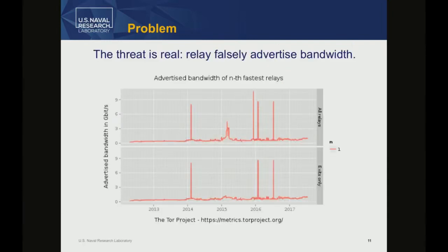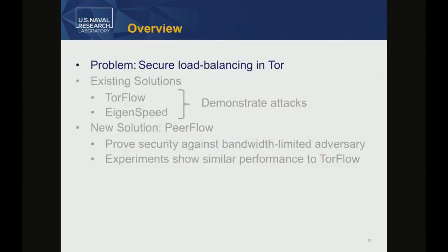This is a real threat. This graph shows the top TOR relay by advertised bandwidth since 2012. You can see at least a few very suspicious spikes that generally last less than a day. In at least one case, it was confirmed that somebody intentionally manipulated it — that case was a researcher with no obviously malicious intent — but it shows someone who knew about this and used it to attract more client traffic.